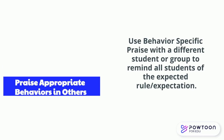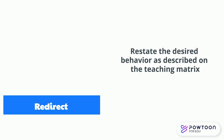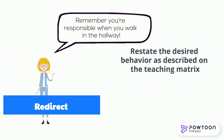When you praise appropriate behaviors in others, you help kids get back on track by looking for those who are doing the right thing and praising them publicly. When you redirect, you restate the desired behavior as described on your teaching matrix or your school-wide matrix.